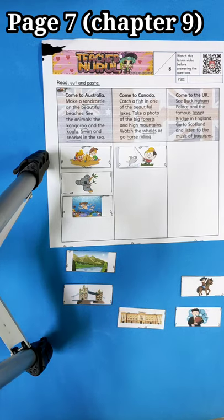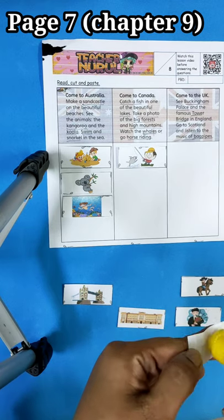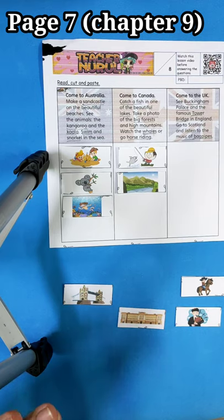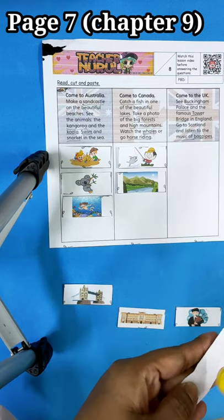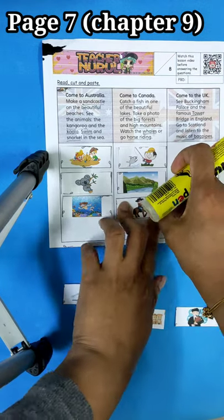Big forest. High mountains. We have it here. So we just put it here. Watch the whales or go horse riding. Whales? No whales but we have horse riding here. So we just paste it down here.